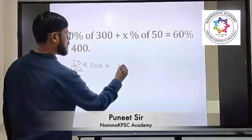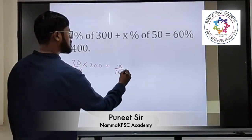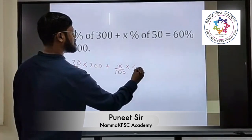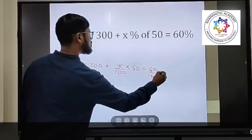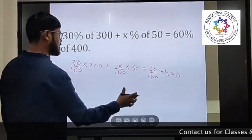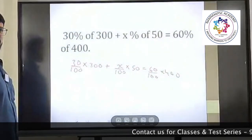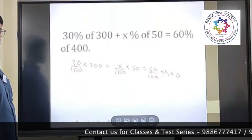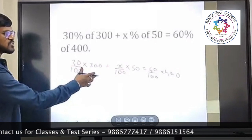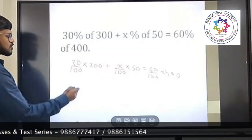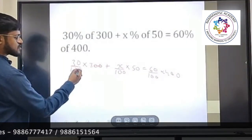x by 100 into 50 is equal to 60 by 100 into 400. So you can see that in all the terms 100 is there, right? Rather than just directly putting it as a denominator, we'll solve this equation. Two zeros here, two zeros here.